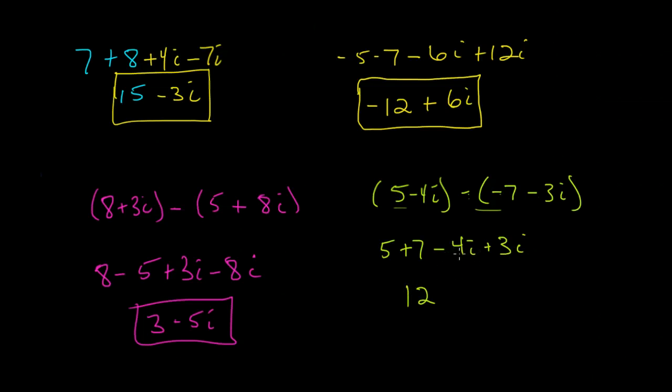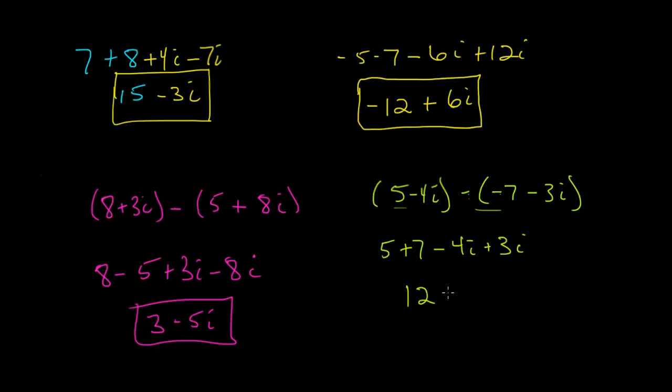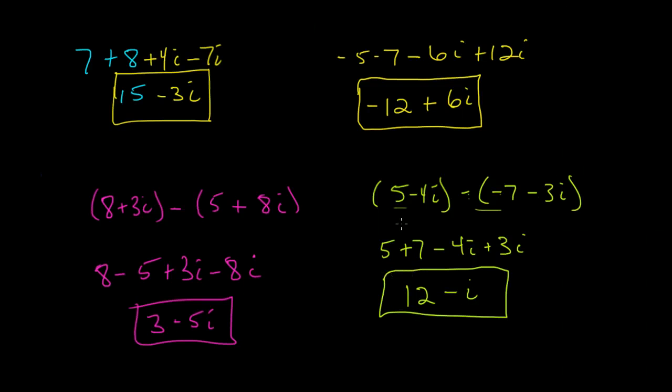And so I'll get 12 minus 4. If you owe me $4 and you pay me $3, you still owe me $1, or 12 minus i. So that's addition and subtraction using complex numbers.